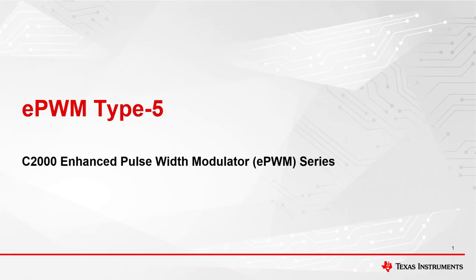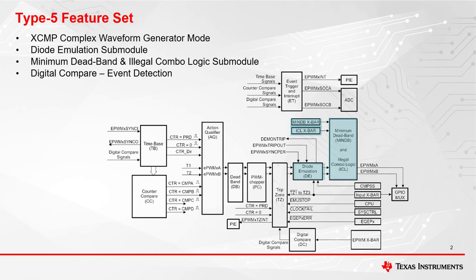Hi all, in this video I'll be going over the EPWM Type 5 features. These features were implemented to allow for more flexibility in waveform generation and additional safety features. The Type 5 main feature set includes the XCMP complex waveform generator mode, additional safety features in two added submodules called Diode Emulation, Minimum Deadband, and Illegal Combinational Logic. On top of the already existing Type 4 EPWM Digital Compare, the Digital Compare submodule has an additional safety feature called Event Detection. Every PWM module will have these new features.